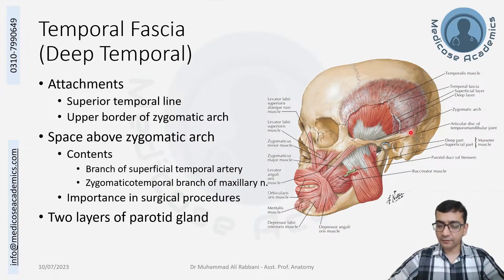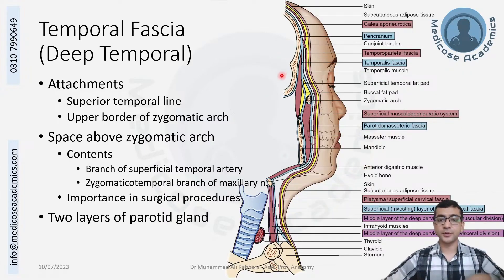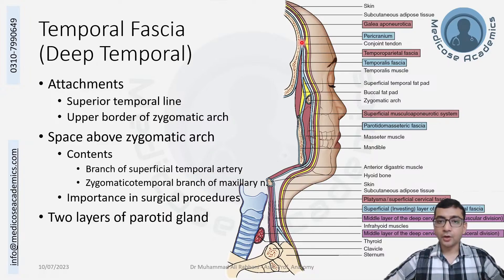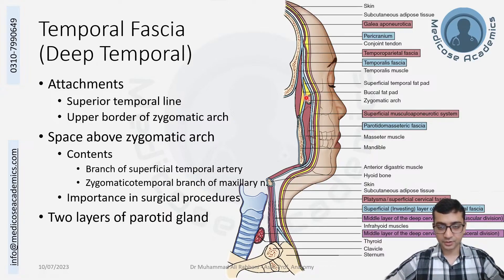After continuing with the zygomatic arch, this fascia goes down and forms the two layers of the parotid gland capsule. As shown in this picture in light blue, the temporalis fascia (deep temporal fascia) is attached to the superior temporal line. Above that point it is continuous with the pericranium of the cranium. Below it covers the temporalis muscle. Just above the zygomatic arch it divides and attaches to the outer and inner margins of the zygomatic arch.